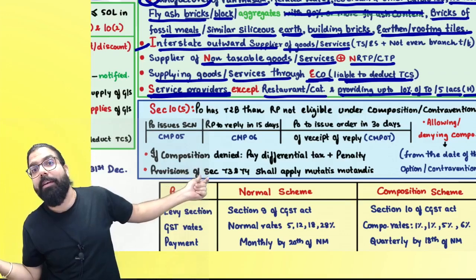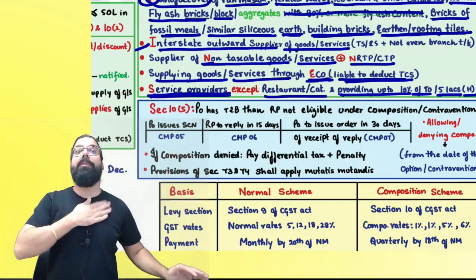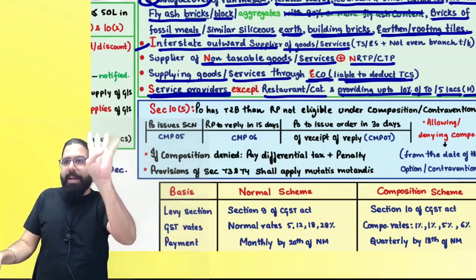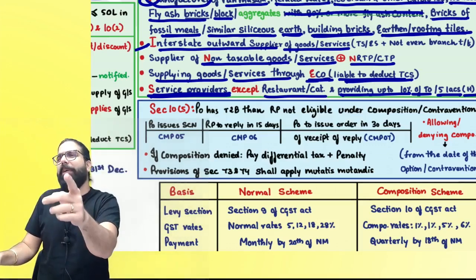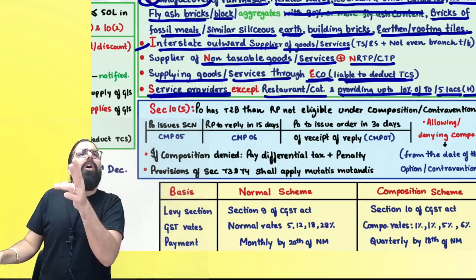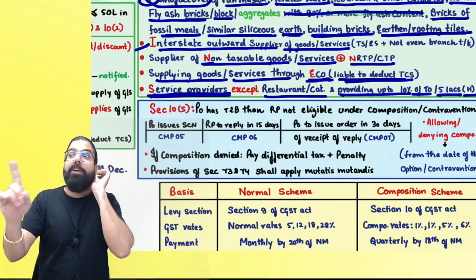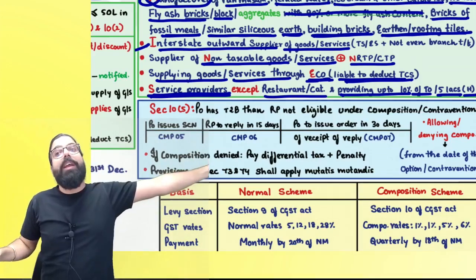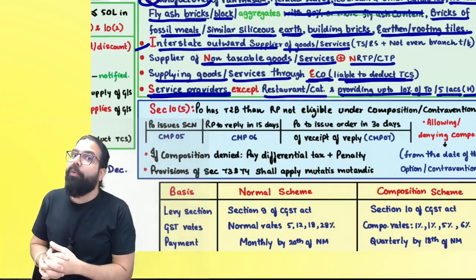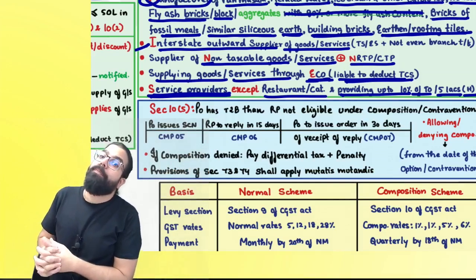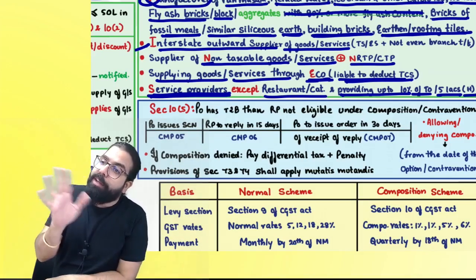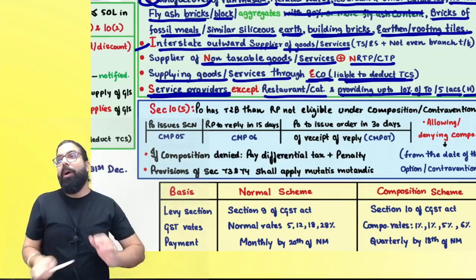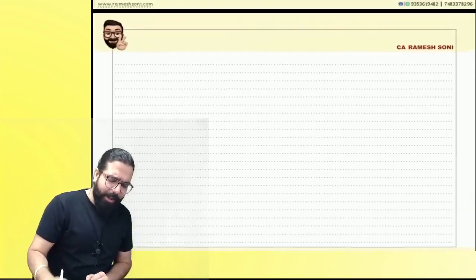Can't collect tax, can't take ITC. Under Reverse Charge pay at applicable rate out of your own pocket. Ineligible people: MINES. M — manufacturer of PAIT plus bricks; I — interstate outward supplier; N — non-taxable goods supplier and NRTP/CTP; E — person supplying through e-commerce where TCS is deducted; S — service provider (except restaurant and those providing services up to 10% of turnover or 5 lakh, whichever is higher). Now let me explain how to calculate this 10%.